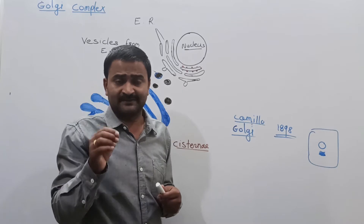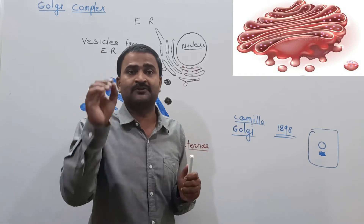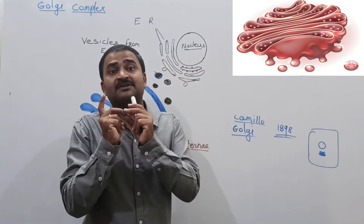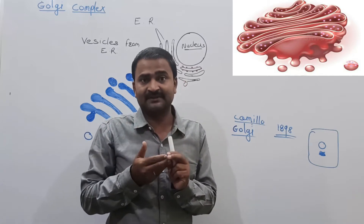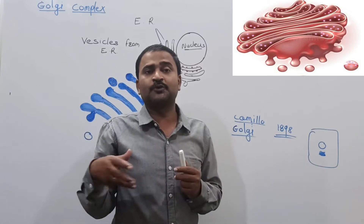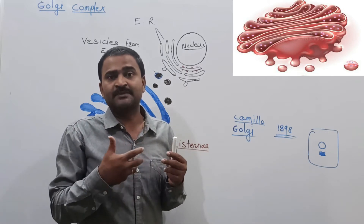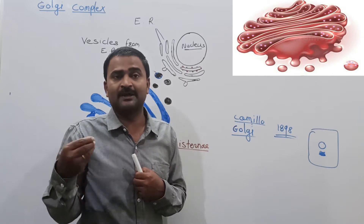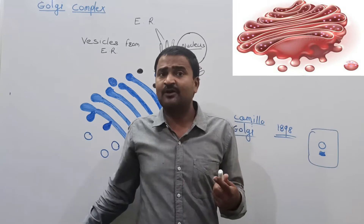The Golgi apparatus is the manufacturing, packaging, and transport unit of the cell. The Golgi apparatus manufactures secretory substances, then packages them, and helps in their transport. An important function is that the Golgi apparatus performs modification of chemicals prepared by the endoplasmic reticulum.